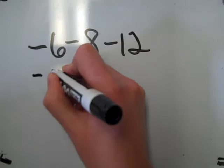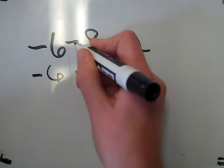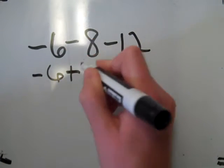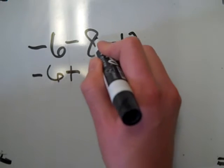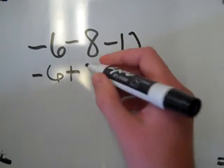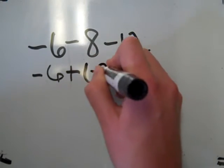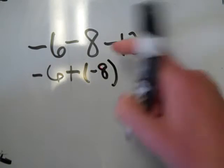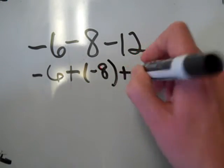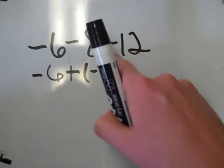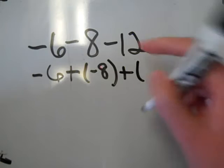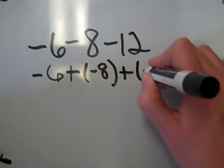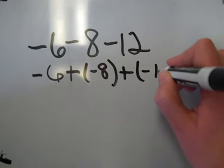The first number stays the same. I change this subtraction to addition and I have to make sure I change 8 to its opposite — the opposite of 8 is negative 8. I change this subtraction to addition as well, and I also have to change 12 to its opposite — the opposite of 12 is negative 12.